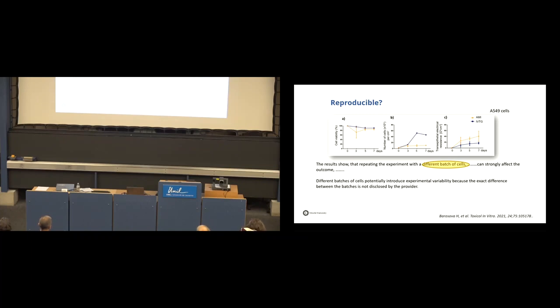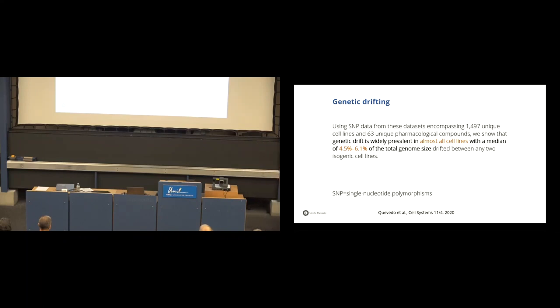And again, different batches of cells potentially introduce experimental variability because the exact differences between the batches is not disclosed by the provider. And one of the causes, and we have heard that before, is genetic drifting.